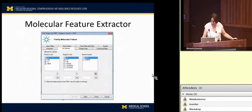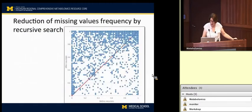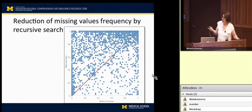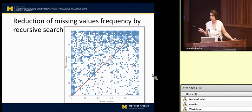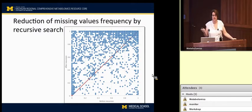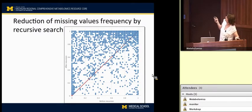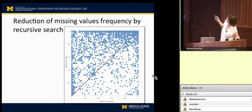When you do that recursive alignment, you get a much greater percentage of your samples with a frequency of one — meaning the feature shows up in all the samples. The higher end of the frequency plot is much more populated after you do this recursion than before.